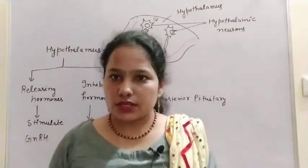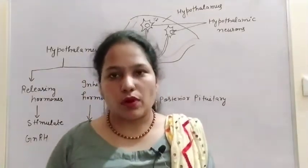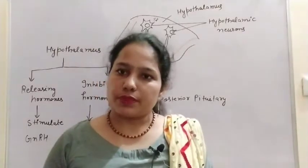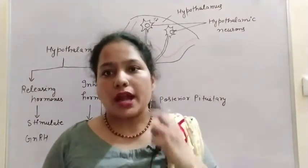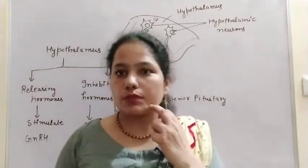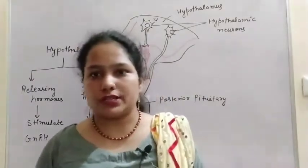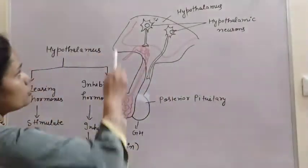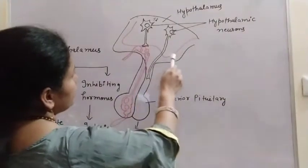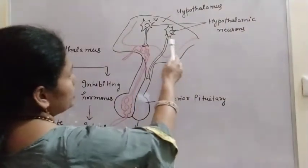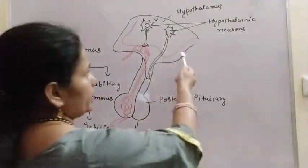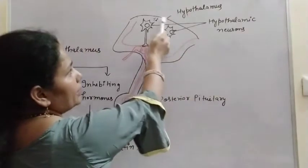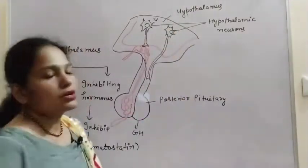The master gland of our body is the pituitary gland, which is present in our brain. Because the hypothalamus regulates the pituitary, it is known as the master of master gland. It is present at the base of the forebrain, or the diencephalon — that is the hypothalamus.